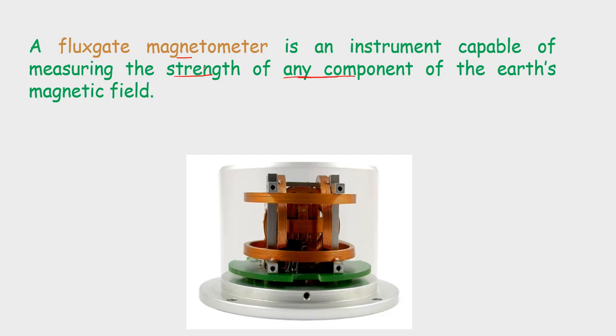We shall look at other types of magnetometers and we shall see that some of them will not be able to measure, say, the horizontal component of the Earth's magnetic field.